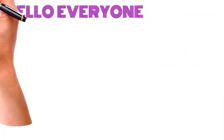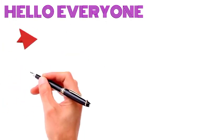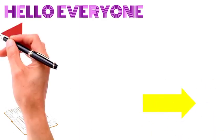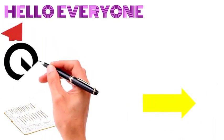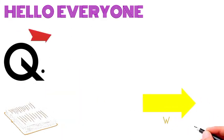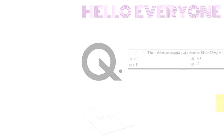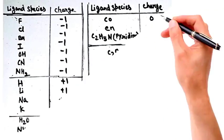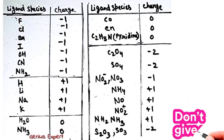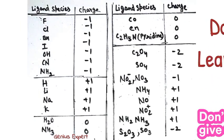Hello everyone and welcome to my YouTube channel Genius Expert. Today we are going to do NCERT exercise 9.30. This question requires you to find the oxidation state, also called the oxidation number. We have a compound K[Co(CO)₄], which contains cobalt and carbon monoxide. For this question, remember to keep the charges in mind.